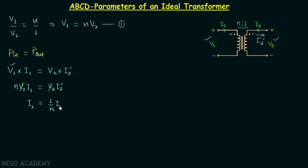We can see that I2 and I2 prime are currents in the same wire but in opposite directions, and therefore current I1 equals minus (1/N) multiplied by current I2. Let us call this equation number two.